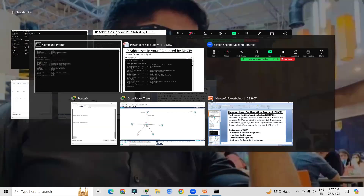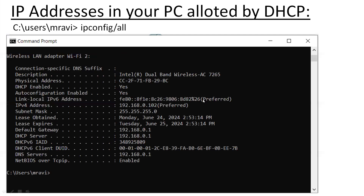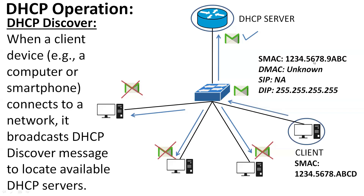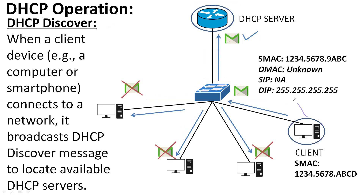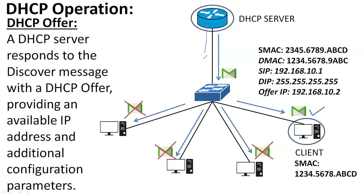There are four different operations in the DHCP process. The first operation is the Discover message. A Discover message is generated from the client — let's say this PC is requesting an IP address. It will forward a Discover message to the switch to find the DHCP server. All packets are broadcasted in all directions to all PCs, but only the DHCP server will accept this message. The Discover message is used solely to locate the DHCP server.